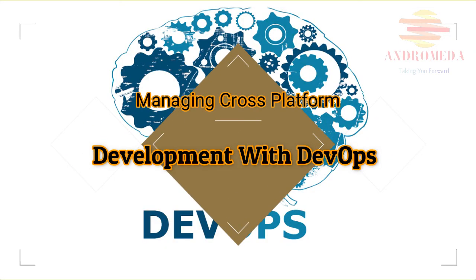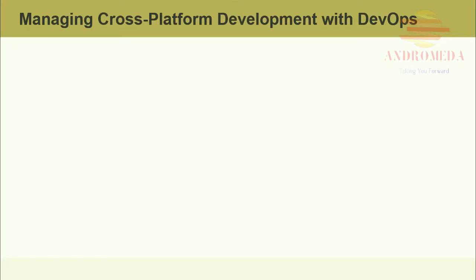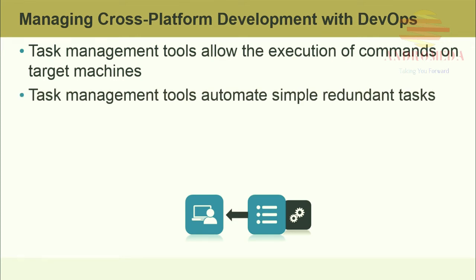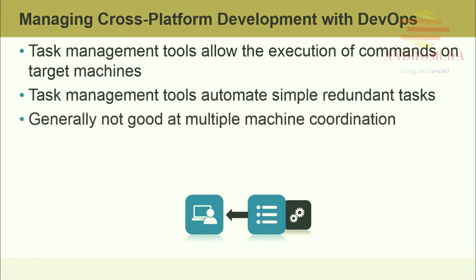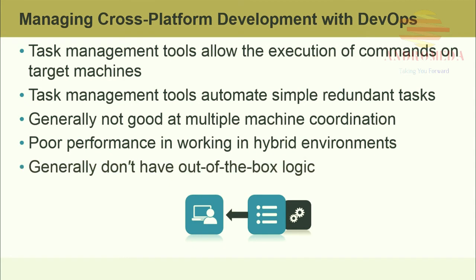DevOps offers a plethora of tools used to automate task management — from checking email to viewing customer feedback on a deployed website. Task management tools allow the execution of commands on a target machine; the back end usually contains an API that automates operations that previously were manual. Tools like Asana automate project management by processing tasks and generating timelines. However, tools usually run on a single device and are generally not good at multiple machine coordination, have poor performance in hybrid environments, and any customization is expensive. Generally, they don't have out-of-the-box business logic.